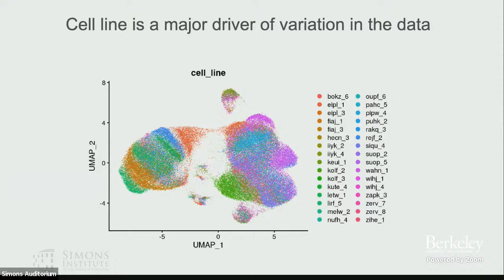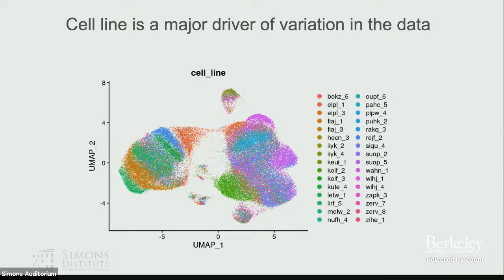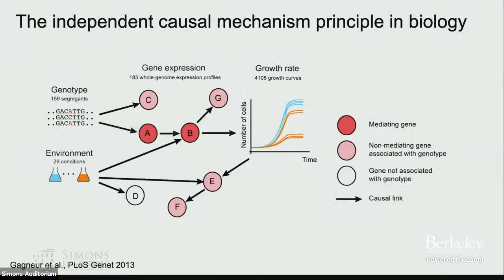More excitingly, looking at the UMAP of this data, the core structure is driven by donor line effects — these are actually stronger than individual CRISPR perturbations. This leads us to revisit old ideas about exploiting multiple-donor components to fit graphical models using independent causal mechanisms principles: the causal graph should be invariant across different people, and we can use that invariance for causal discovery.